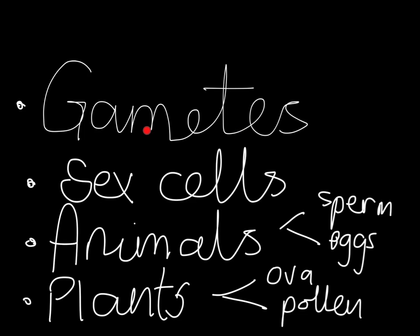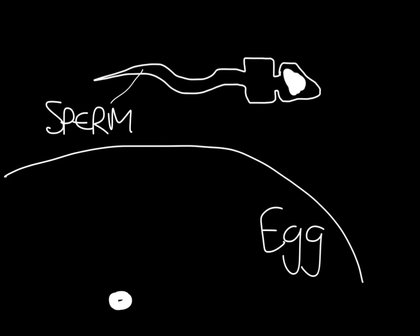We're going to look at gametes, and gametes is a posh word for sex cells. The two basic groups are the animals, which are split into sperm and eggs, and the plants, which are split into ova and pollen. But all four of these are gametes. In animals there are two — the sperm and the egg.